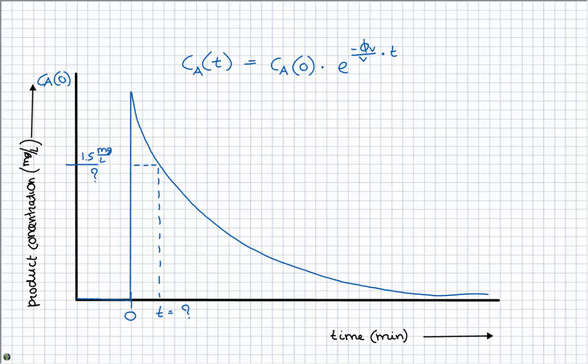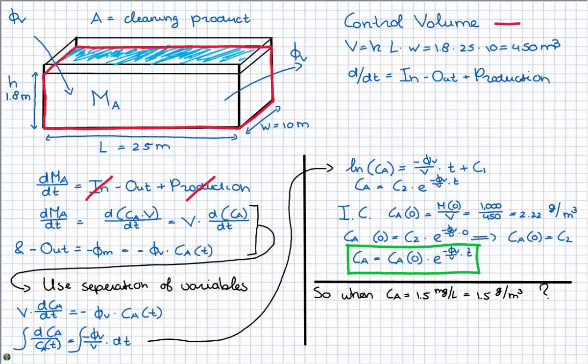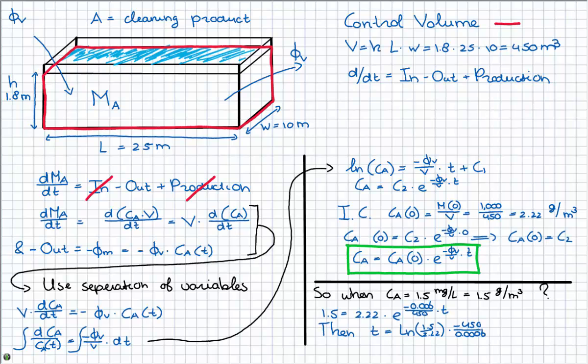So, let's go back to our calculations. So, then we fill in all that we know, and then you see that it's actually quite easy to calculate with a simple calculator. 1.5 is 2.22 times e to the power a number times t. Then calculate t by filling everything in, and then you will see that these are quite a lot of seconds, but actually these are only 8.2 hours.